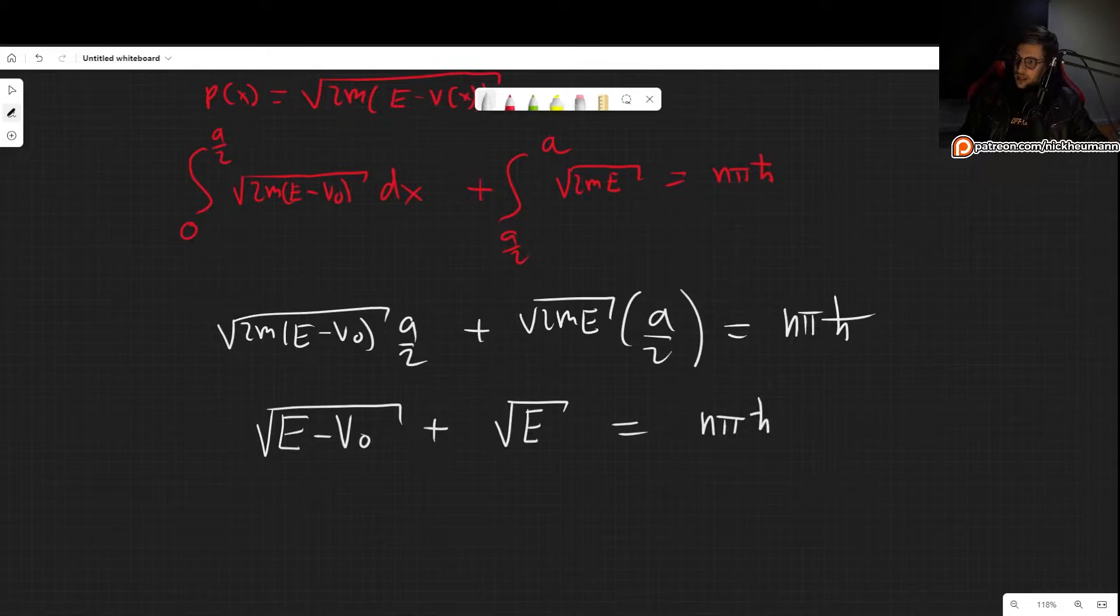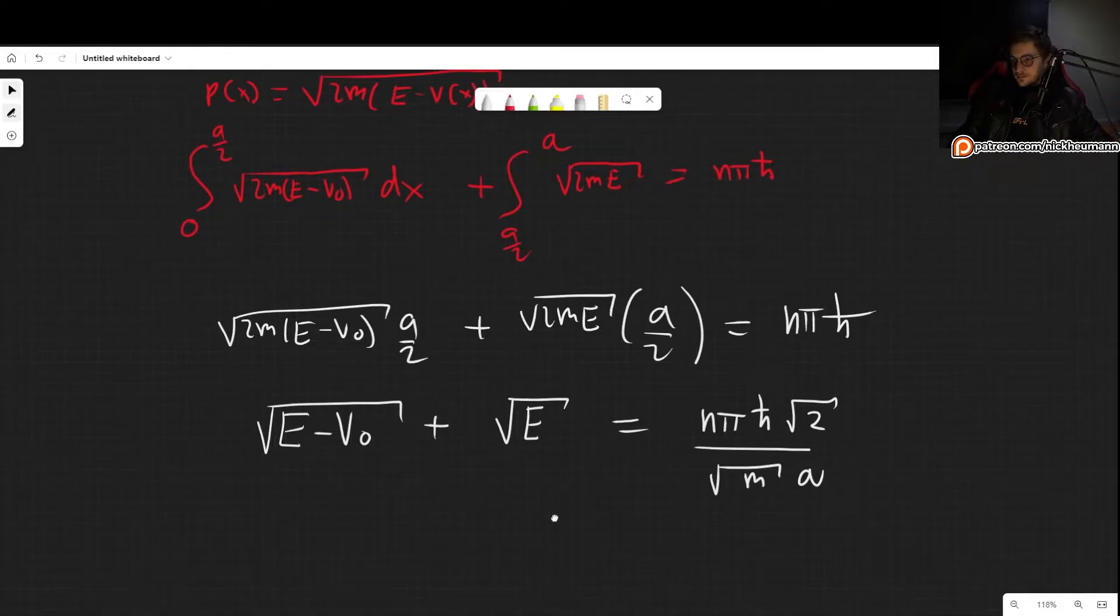N pi H bar, and then we have—let's see—A over 2 here. We are dividing by the square root of M and also of 2, of 2M, and there is an A. Since we have a square root of 2, we can divide this and we get square root of 2 up there.